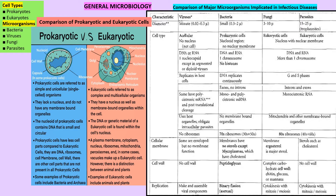Here we can see the difference between prokaryotic and eukaryotic cells. Prokaryotic cells, like bacteria, do not have any membrane-bound organelles, but they have their genetic material condensed in the center of the cell called a nucleoid. Eukaryotes have membrane-bound organelles, a proper nucleus, and ribosomes at 80S, while the ribosome in prokaryotes is just 70S.